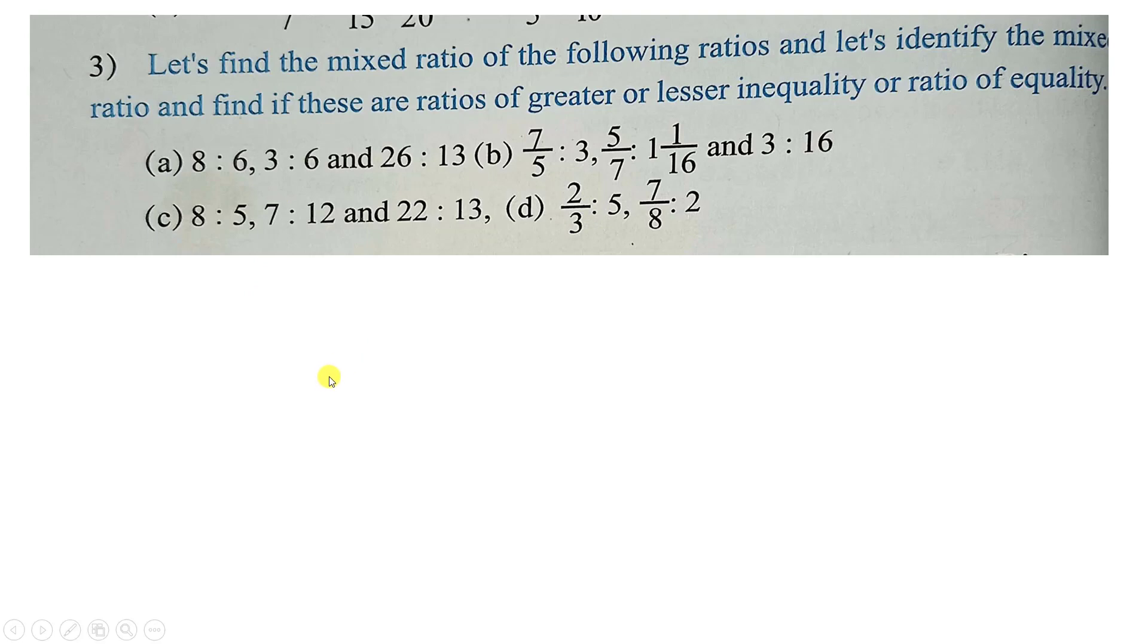This is greater inequality or lesser inequality or equality. Let us try to do question number a. Mixed ratio means, how many ratios are there, their antecedents multiply. Final product is the mixed ratio antecedent.